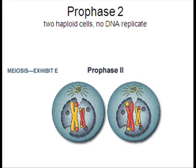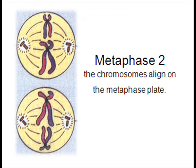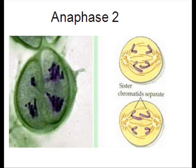Reproduction is only able to occur because of gametes. Sexual reproduction involves two parents making offspring, and this allows for even greater genetic diversity.